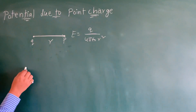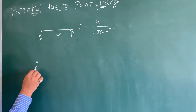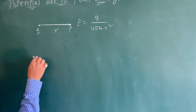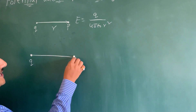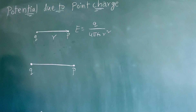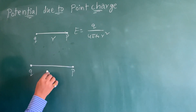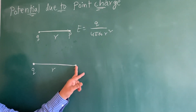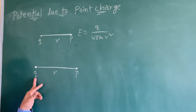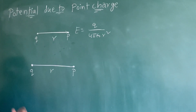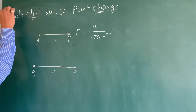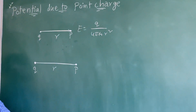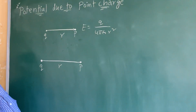Assume a point charge q, and we are going to find the potential at point P, which is at a distance r from q. This derivation is very very important. They will ask you to define potential and derive the equation for potential due to a point charge.